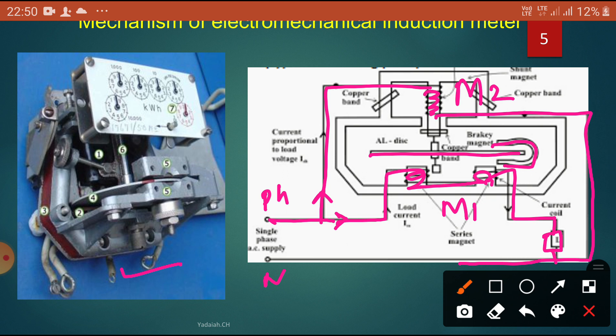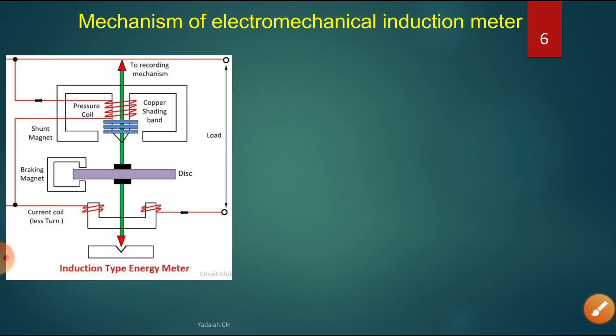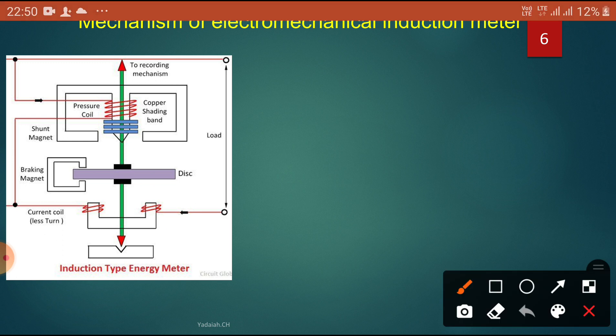What is the mechanism in the induction type energy meter? Looking at the circuit diagram, it has two magnets, M1 and M2. This is equal to M1 and this is equal to M2. Two magnets are present — one is the voltage coil and another is the current coil. M2 is the voltage coil electromagnet.